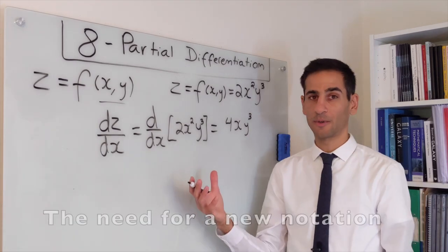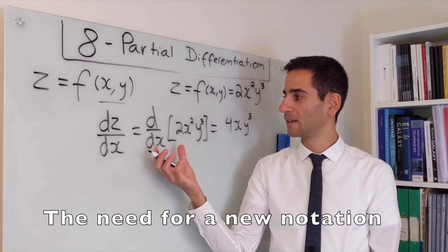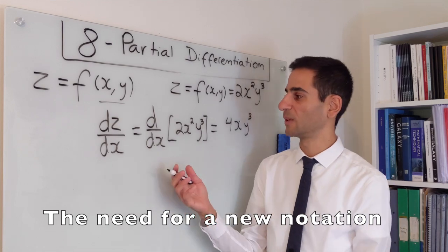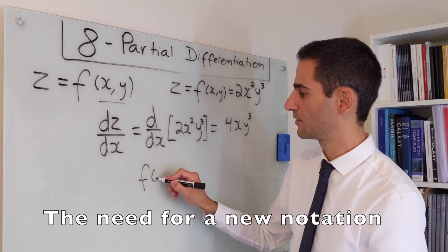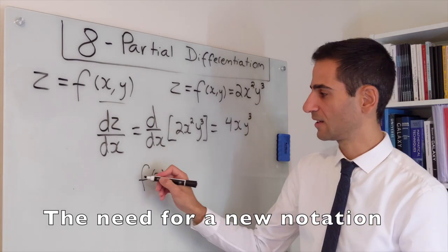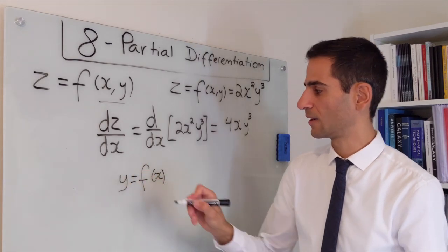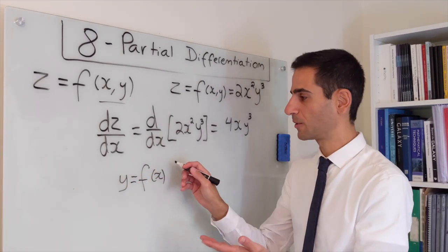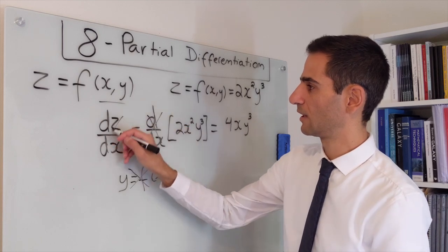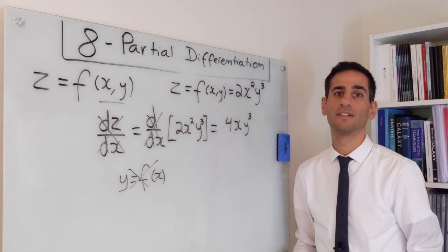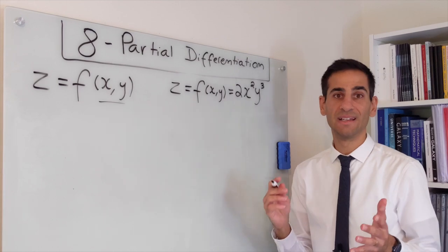The problem here is that this notation is not very clear. We use it whenever we have functions of just one variable, and in this case this is when we use dy/dx. But this becomes inappropriate when we look at functions of more than one variable, so we're going to get rid of it.